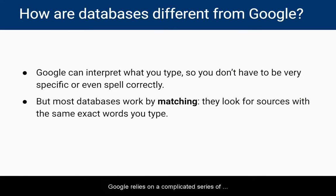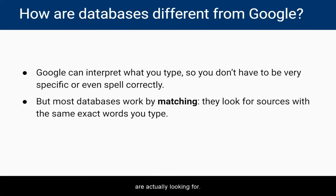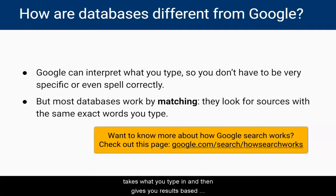Google relies on a complicated series of algorithms to take what you type in, interpret the meaning of your search string, and provide a ranked list of search results based on what it thinks you were actually looking for. Often, they use data from how previous searchers of the same topic interacted with the search results. In short, Google takes what you type in and gives you results based on what it thinks you want.